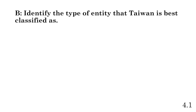Part B: we're classifying Taiwan as a type of political entity, and the best answer here is an autonomous region. An autonomous region is a region within a country that has a lot of control over itself, with perhaps one body of oversight, but the region makes most political decisions for itself. We see that with Taiwan.